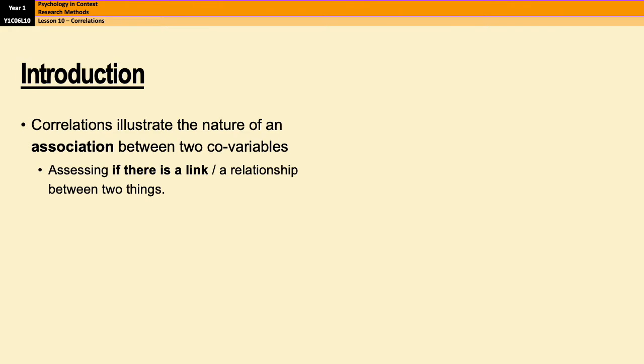So correlations are a type of research method that illustrate the nature of an association between two co-variables. What that means essentially is that it looks at if there is a link or a relationship between two things. It looks at what that link is and it also looks at how strong that link is.